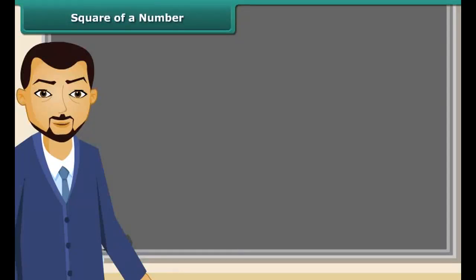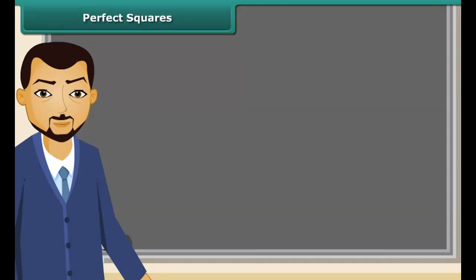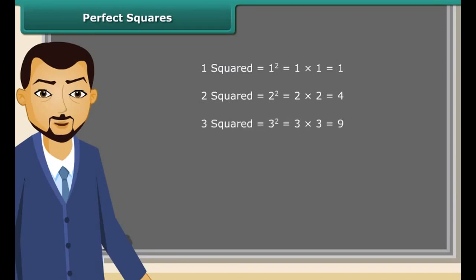Let us first learn about squares. How can we square a number? It is easy — just multiply the number with itself. You can also write the square in the superscript. For example, 4 squared tells us 4 is multiplied twice, which is equal to 16. 1 squared is 1, 2 squared is 4, 3 squared is 9, 4 squared is 16, 5 squared is 25, and so on.